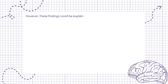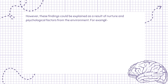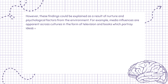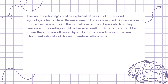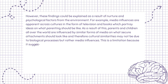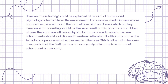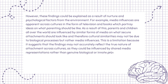However, these findings could be explained as a result of nurture and psychological factors from the environment. For example, media influences are apparent across cultures in the form of television and books which portray ideas on what parenting should be like. As a result, parents and children all over the world are influenced by similar forms of media on what secure attachments should look like, and therefore cultural similarities may not be due to biological processes but rather media influences.